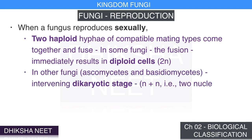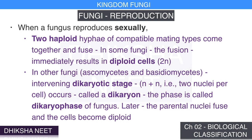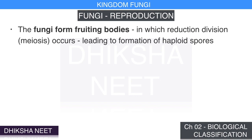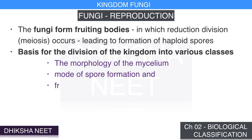However, in other fungi — ascomycetes and basidiomycetes — an intervening dikaryotic stage (n+n, two nuclei per cell) occurs. This condition is called dikaryon and the phase is called the dikaryophase. Later, the parental nuclei fuse and cells become diploid. The fungi then form fruiting bodies in which reduction division occurs, leading to haploid spores. The morphology of mycelium, mode of spore formation, and fruiting bodies form the basis for dividing the kingdom into various classes.